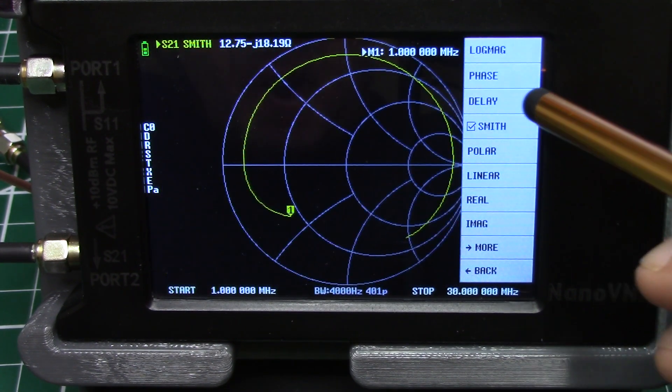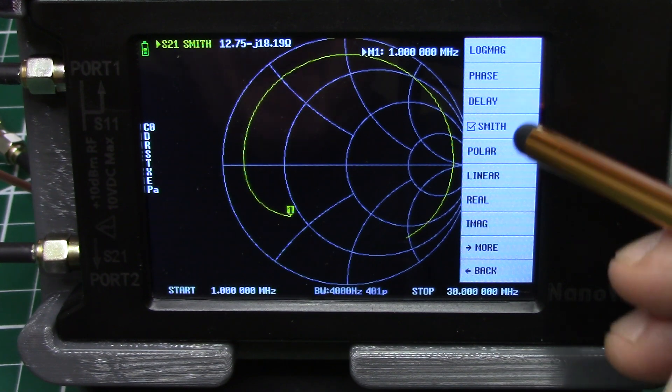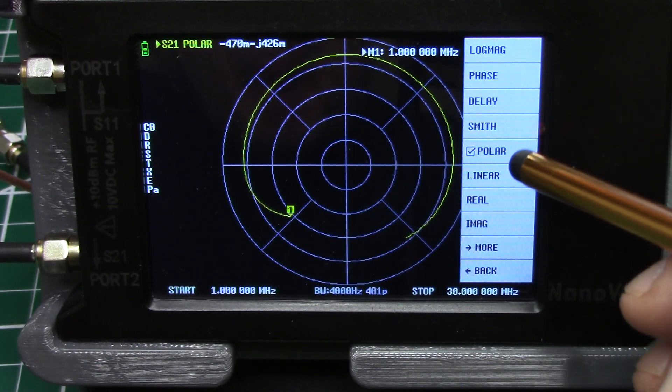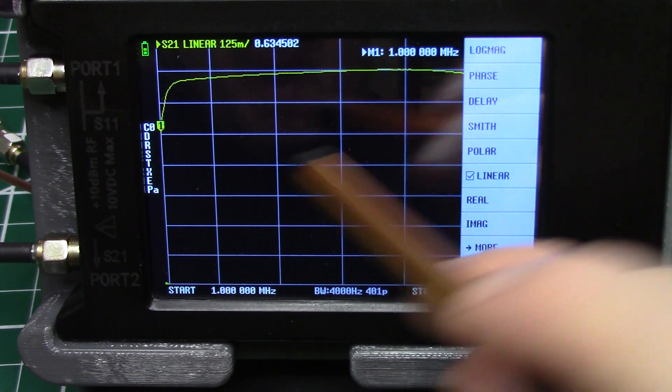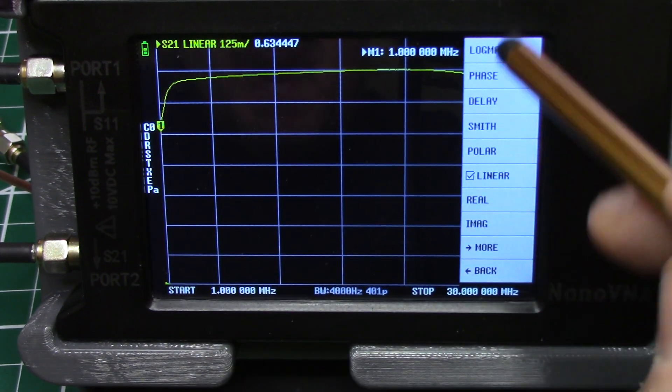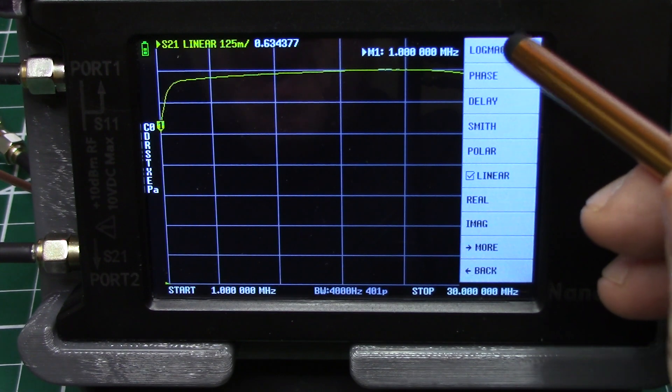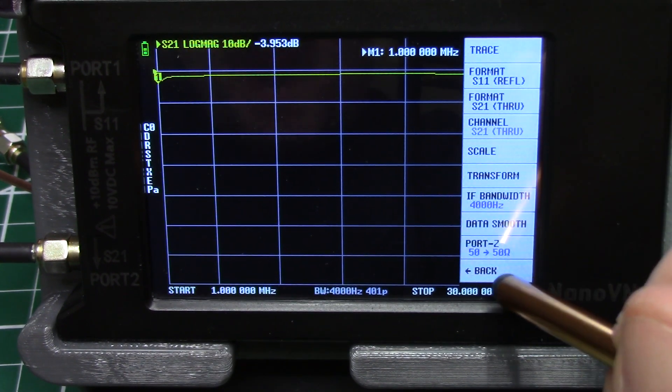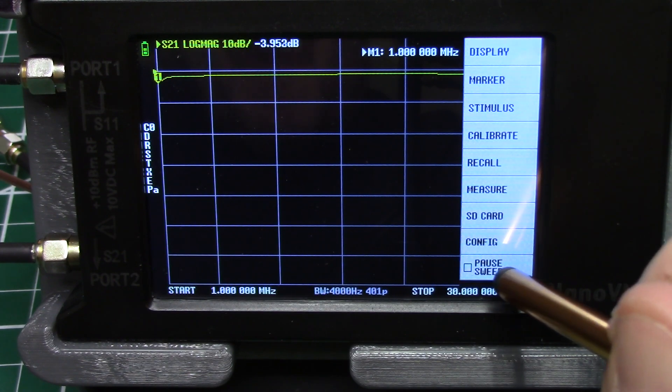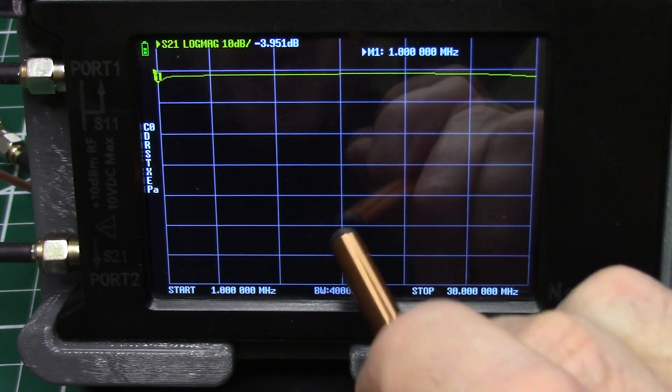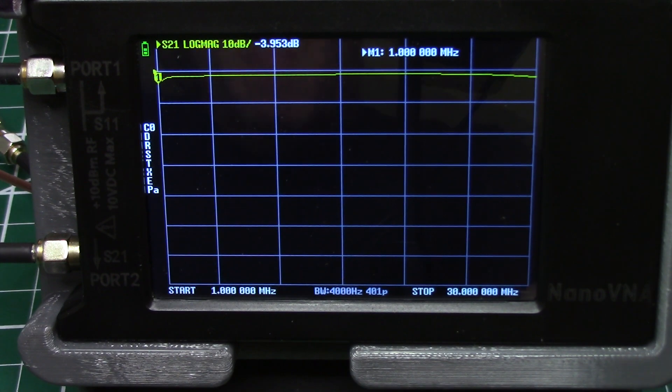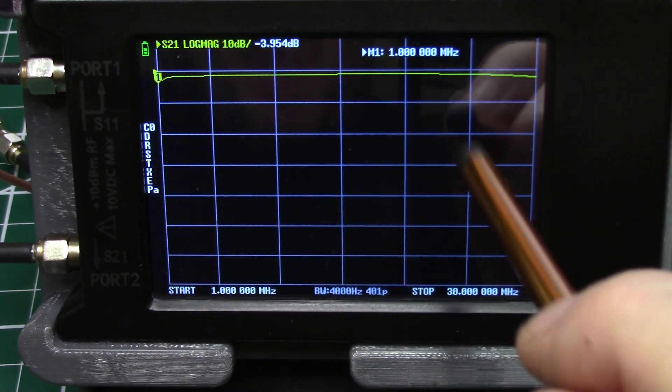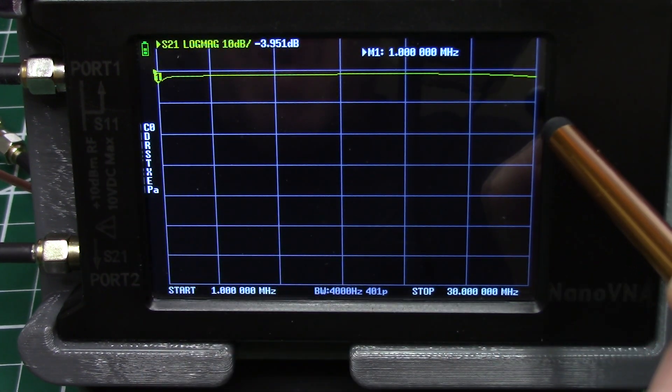And what we're wanting is log mag. We could get a Smith chart if we selected that, polar chart, linear graph and so on. But what we're interested in is log mag. So let's touch on log mag and go back, go back and just click somewhere on the screen to get rid of your menu. So now you're set up to measure S21 log mag.